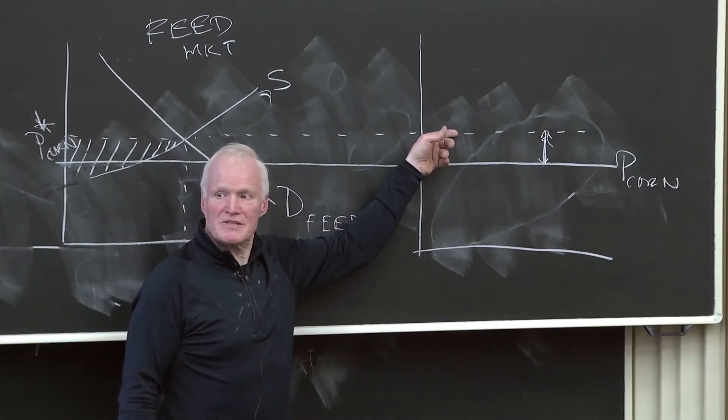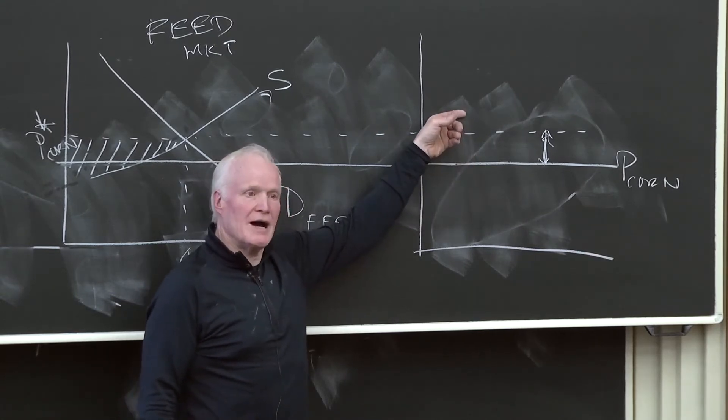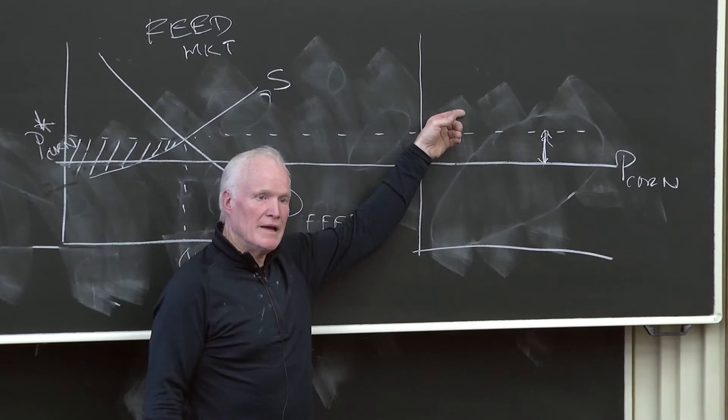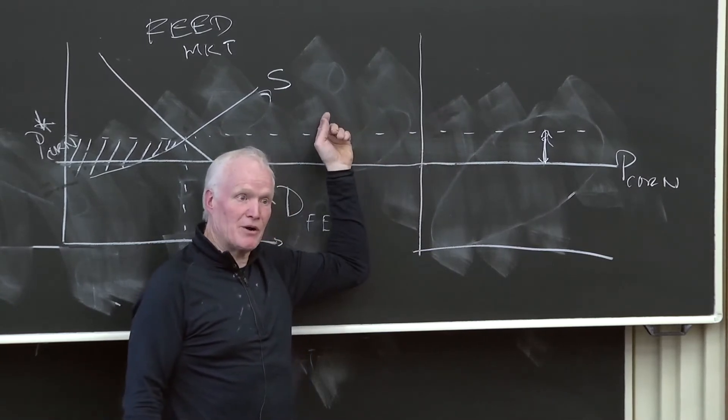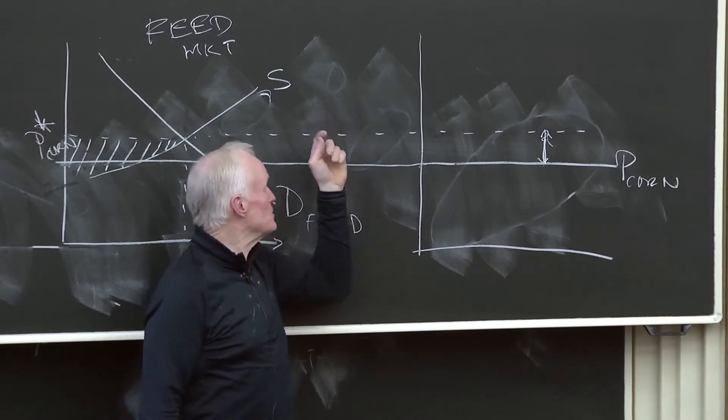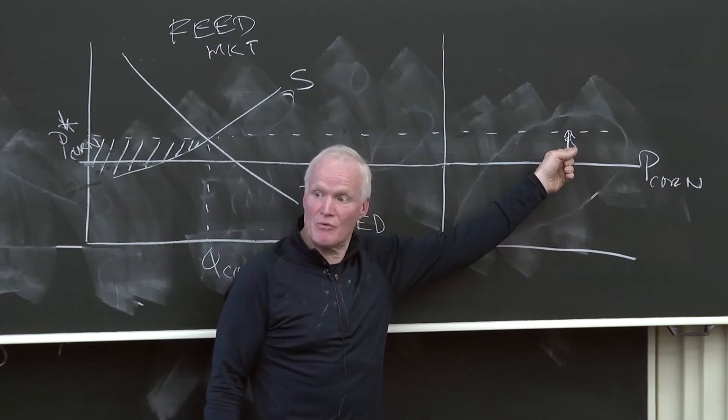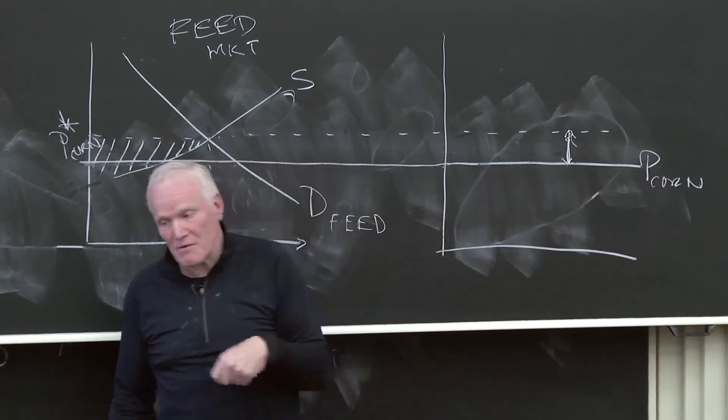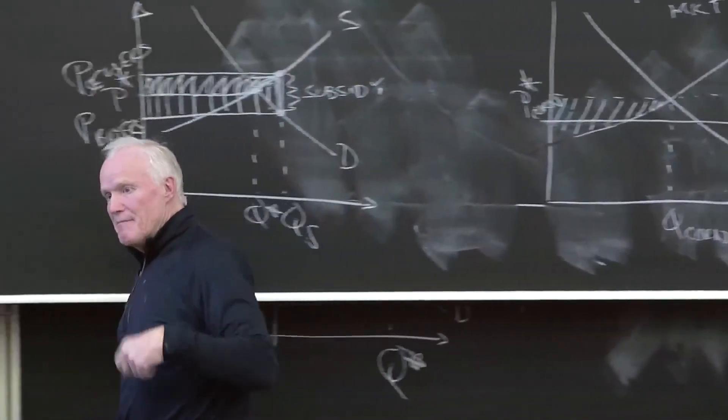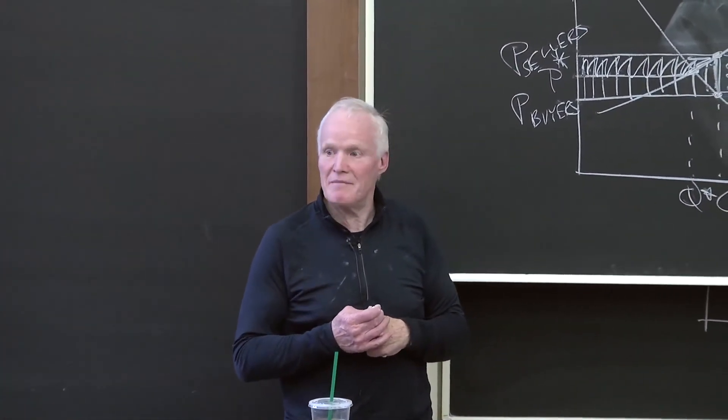Now, once the subsidy gets up to here, he's going to push that price up. Now, his buddies are going to benefit because they're now going to get a higher price of corn because the price of corn in this market has to rise to compete with ethanol. And are the farmers going to gain the amount of the subsidy or more than the amount of the subsidy or less than the amount of the subsidy?